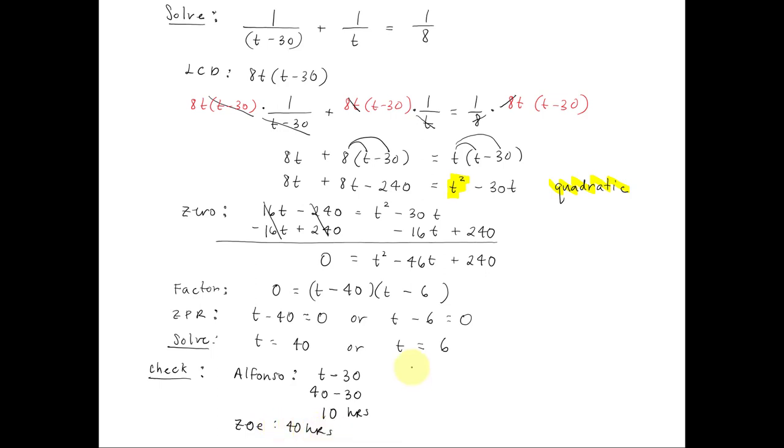Let's check the 6. If we decided to let time equal 6, this means that Alfonso's time is still t minus 30. 6 minus 30, well that's negative 24, and that certainly does not work with time. There's no such thing as negative 24, so we'll omit the solution t equals 6.